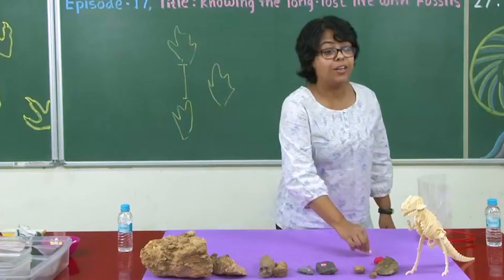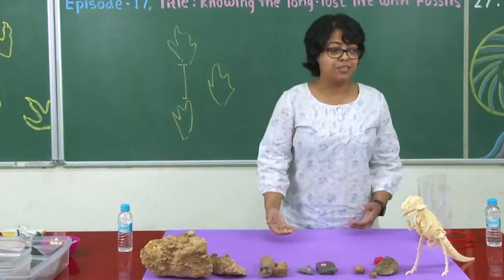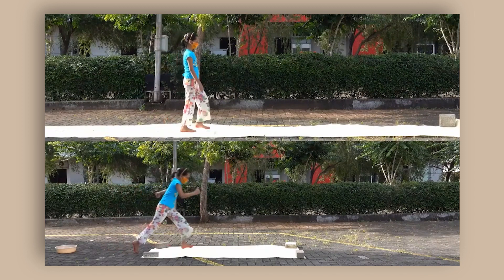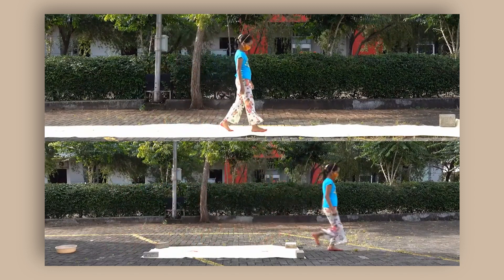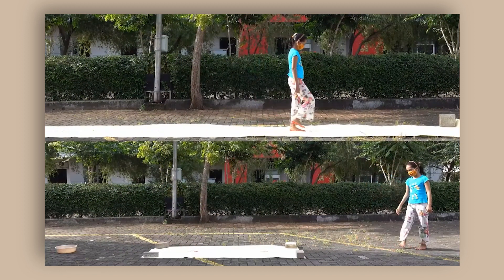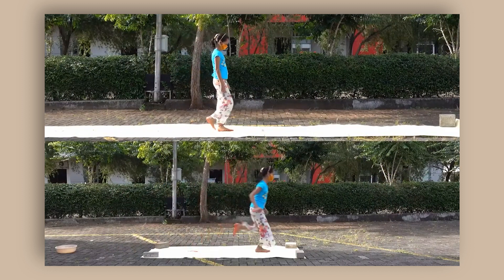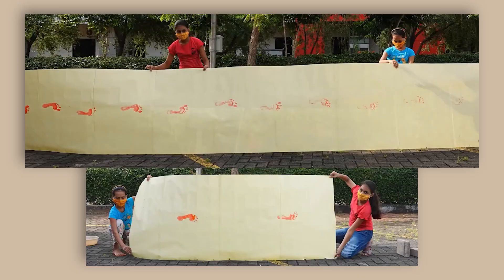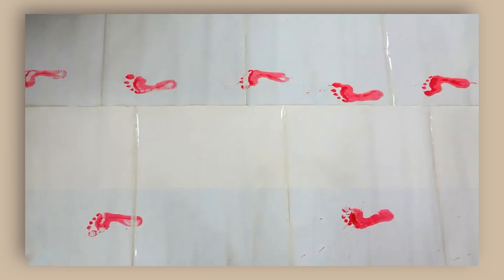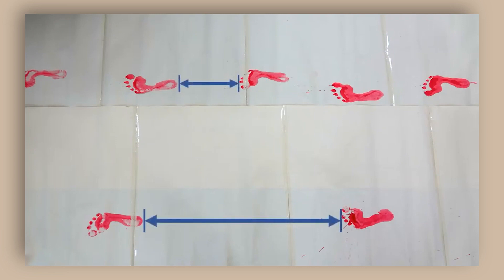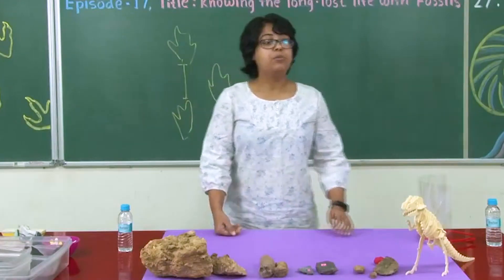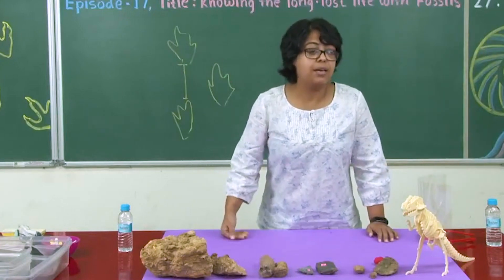I have a nice video which shows this in action. You will see a little girl walking and running. The top panel shows her walking, and the bottom panel shows her running, and we are looking at her footprints. When she is walking, the footprints are much closer together. But when she is running, the stride length — as we call it — is much bigger compared to when she is walking. Using this principle, we can try to understand how the dinosaurs moved.